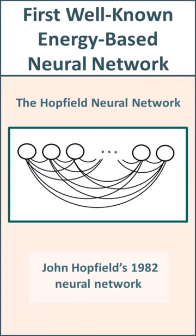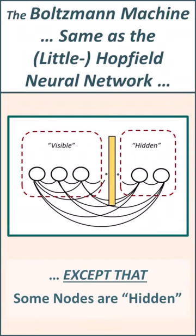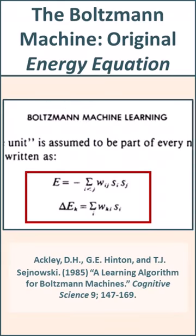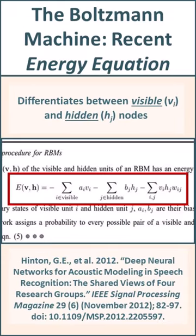The Boltzmann machine and the Hopfield neural network both use the Ising equation from statistical mechanics. This equation shows the specific interactions between the visible and the hidden nodes, as well as the activations of each of the nodes.